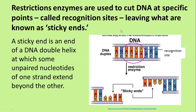Restriction enzymes cut DNA at specific points called recognition sites. This particular restriction endonuclease recognizes the sequence of nucleotides AATT and cuts it at that particular site. It always cuts in a jagged way — it cuts the sugar phosphate backbone, in this case between the G and the A, cuts across the hydrogen bonds, and then cuts down again the sugar phosphate backbone between the G and the A. That leaves a sticky end here and a sticky end here.